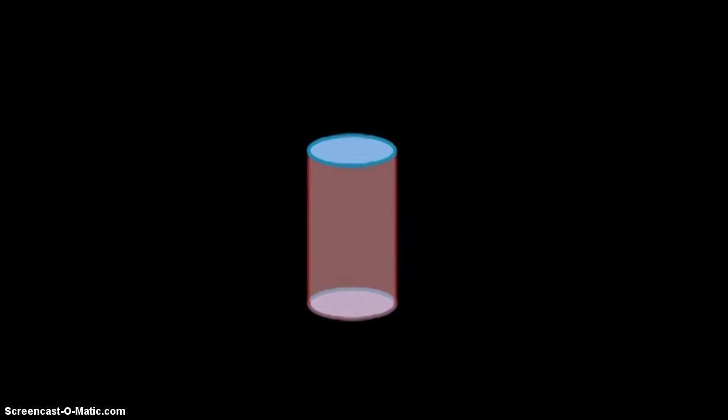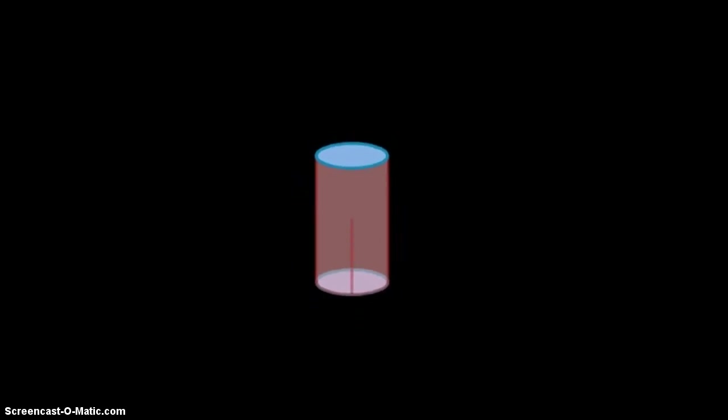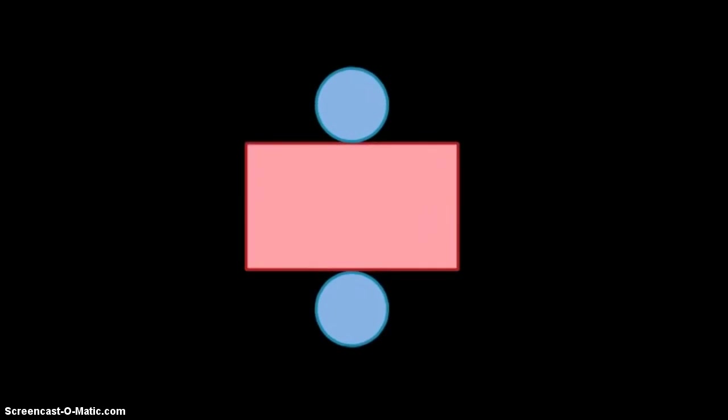So let's watch what happens as we unfold to show its net. When we show the net, you can see that we still have the two circles, and then we have a rectangular face.